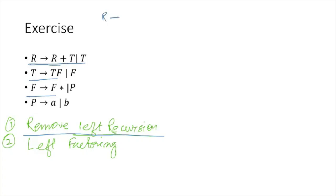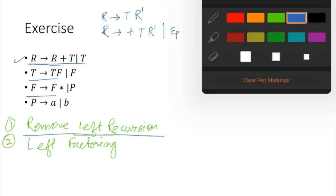R goes to T R prime, R prime goes to plus T R prime. So alpha, that is plus T and R prime, and we have to add this production R prime to epsilon. So this one is rewritten.